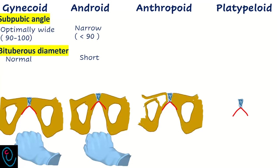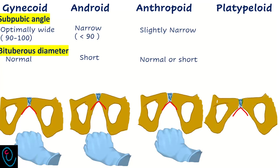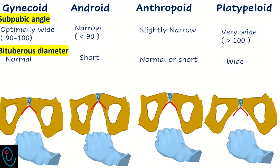In anthropoid pelvis, the sub-pubic angle is slightly narrow and the bituberous diameter is normal or slightly narrow, making non-rotation common with more incidence of face-to-pubis delivery. In platypelloid pelvis, the sub-pubic angle is very wide, more than 100 degrees, and the bituberous diameter is wide, so there is no difficulty in delivery at the level of the pelvic outlet.